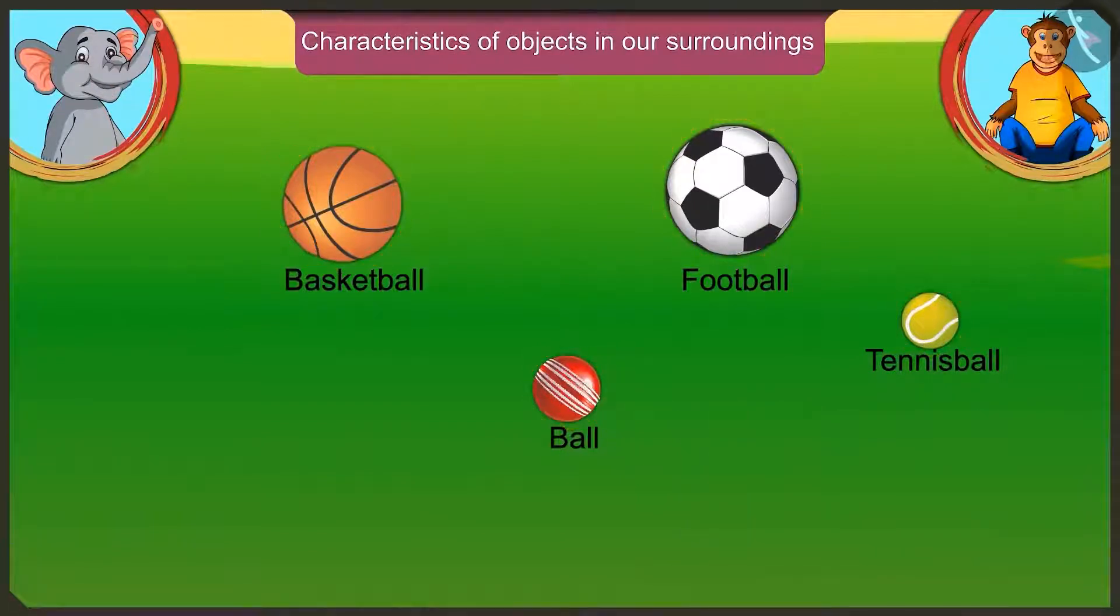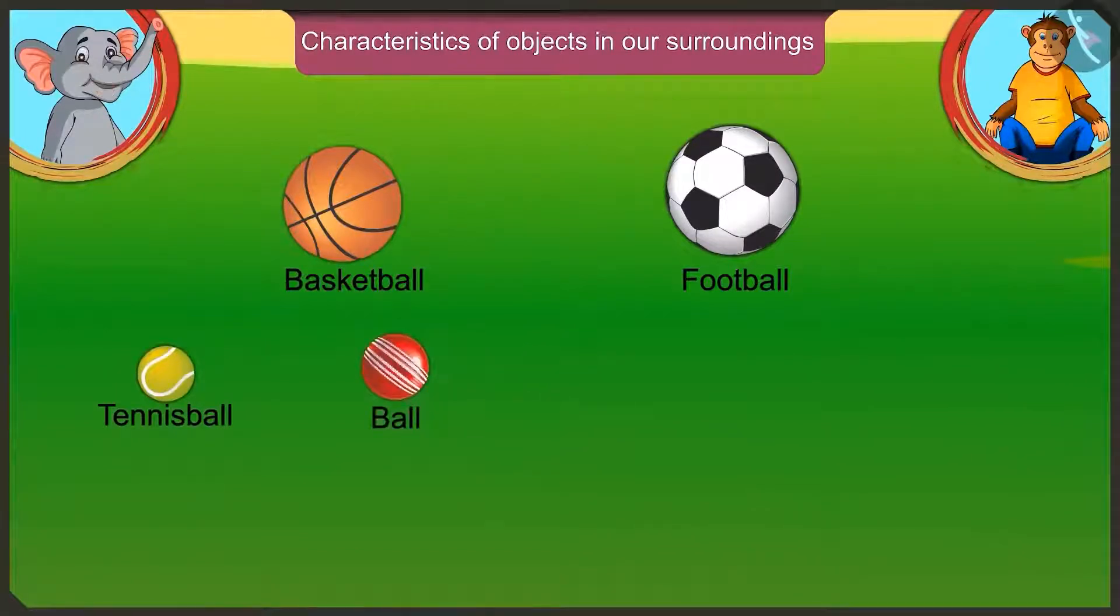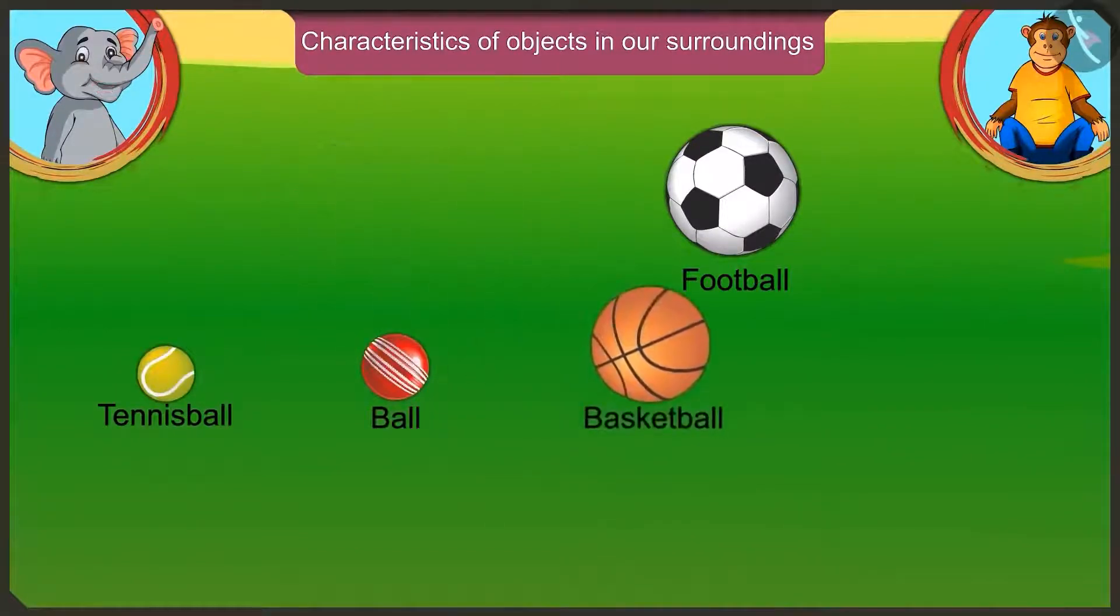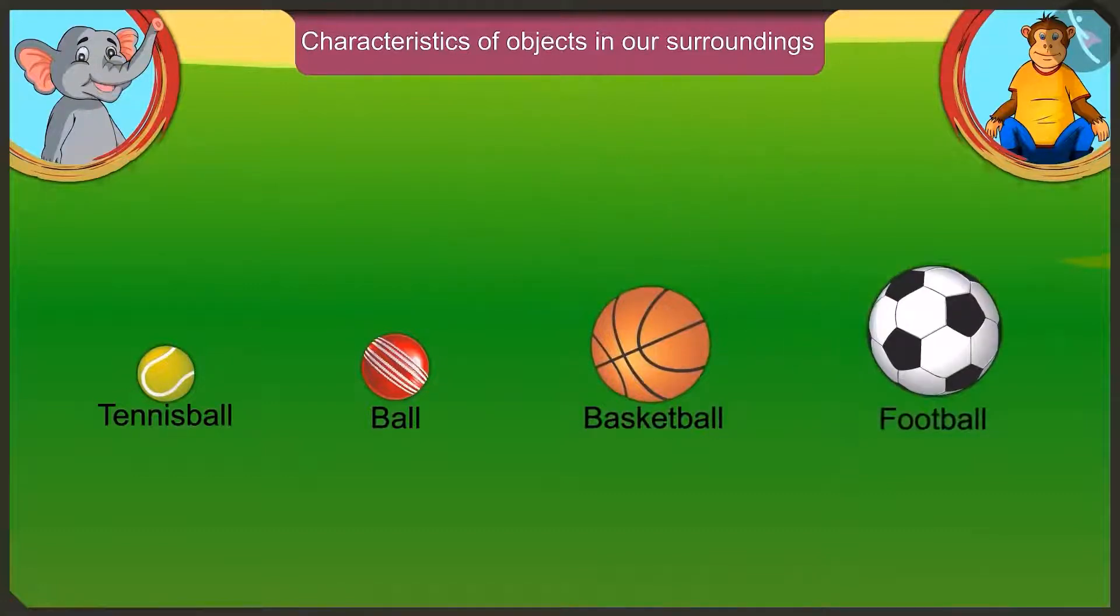Wow, Appu. Now come on, just arrange these balls in the ascending order of their size. Here, according to their size, we first place the smallest tennis ball, then the ball bigger than that, then basketball, and finally, we place the largest football.